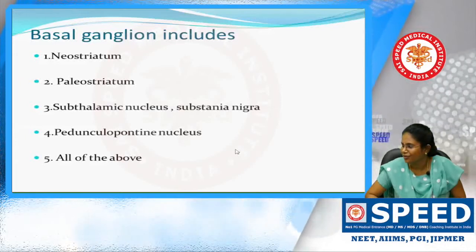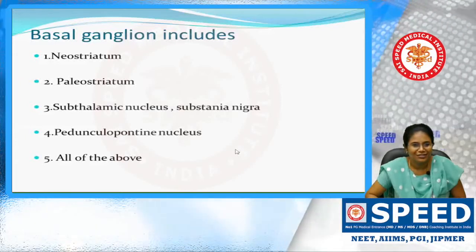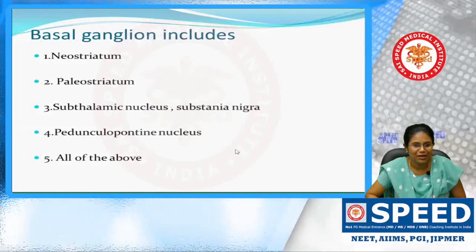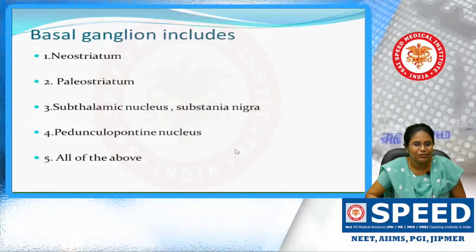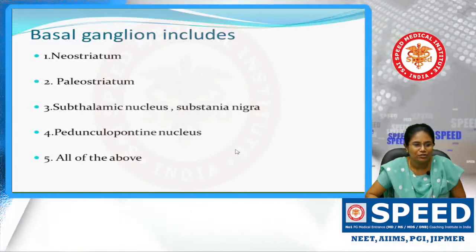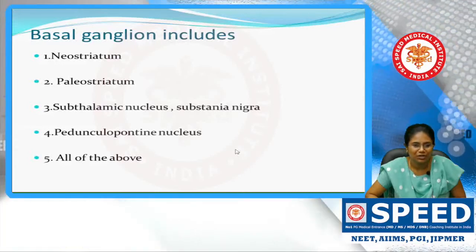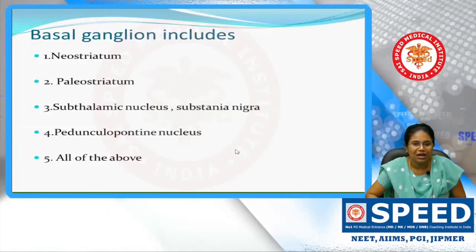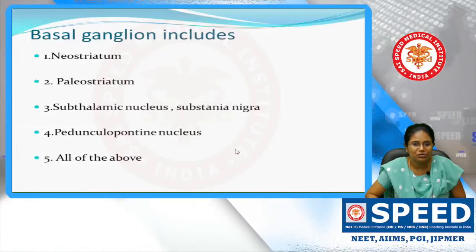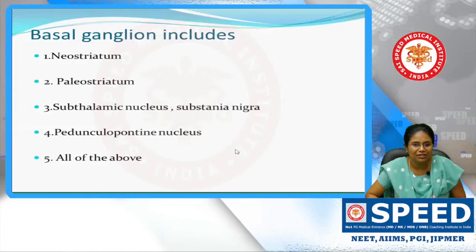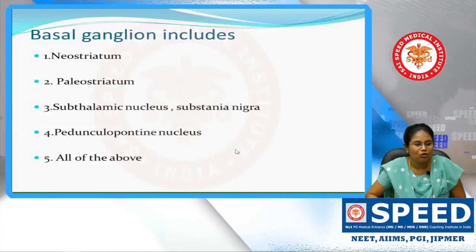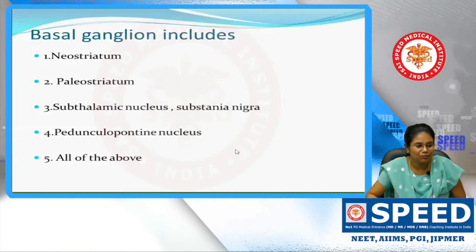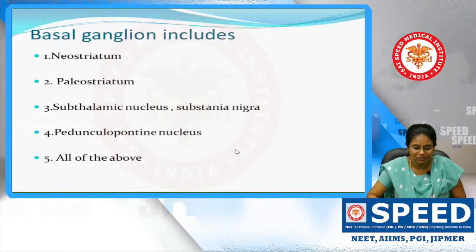The answer is all of the above. It is the neostriatum and paleostriatum — the neostriatum being the caudate nucleus and the putamen. The paleostriatum is the globus pallidus, and the subthalamic nucleus, substantia nigra, and pedunculopontine nucleus are all important for beginning a movement, maintaining and carrying out the movement.